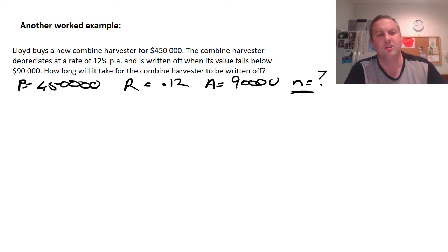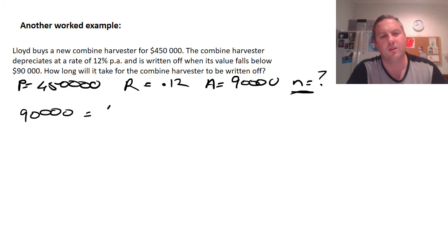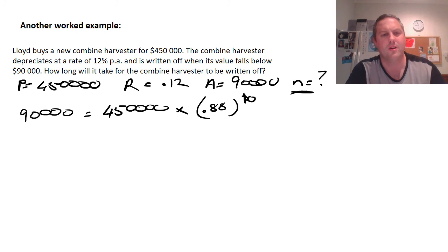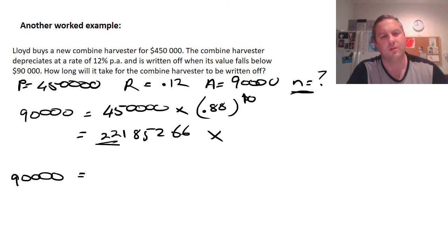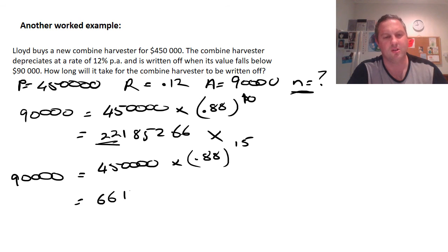Again we use trial and error. Substituting into the formula: 90,000 = 450,000 × (0.88)^n. Trying n = 10: the calculator gives $221,852.66, which is well above $90,000, so it does not work. We try n = 15: 90,000 = 450,000 × (0.88)^15, giving $66,138.23. This is below $90,000, so the answer is somewhere between 10 and 15. We try n = 13.